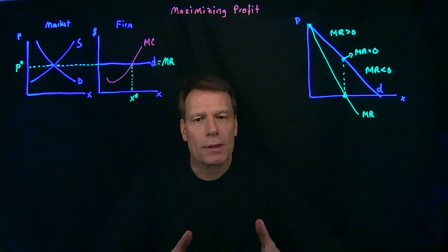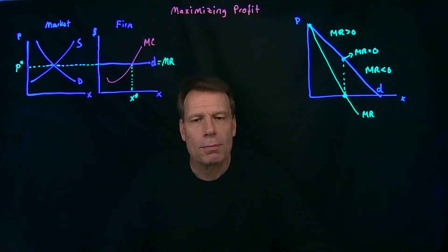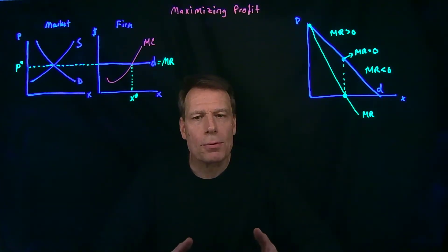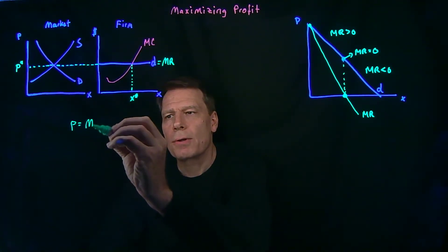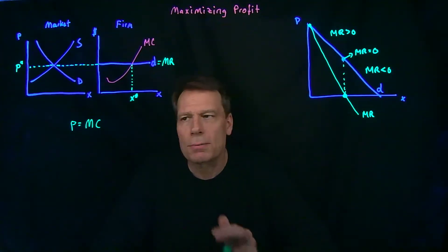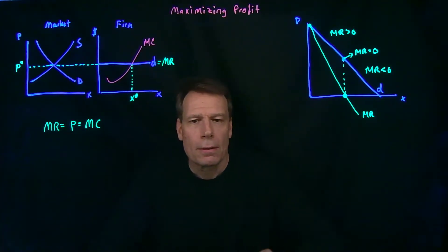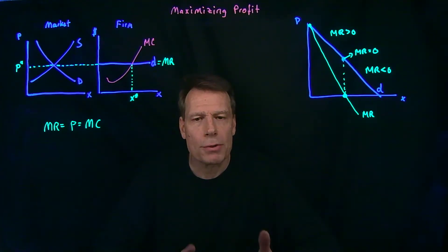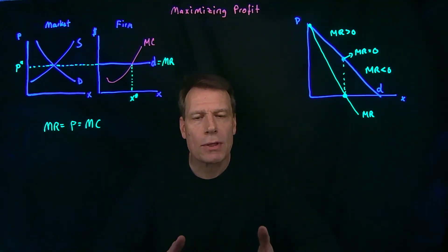Now in the case of perfectly competitive firms, we have the special case where price is equal to marginal revenue. So oftentimes we've abbreviated the decision that firms make as producing the quantity where price is equal to marginal cost. But that's only true because price is equal to marginal revenue. So competitive firms set marginal revenue equal to marginal cost — marginal benefit equal to marginal cost — as is always the case when people do the best they can given their circumstances.